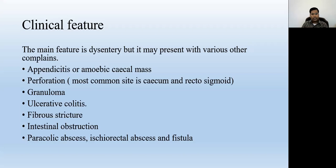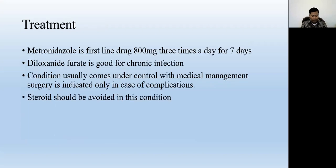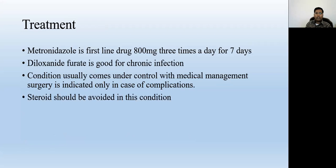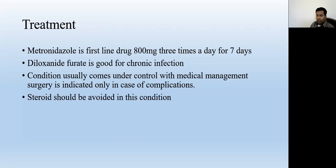These are some other complications and presentations that you can find in a patient with amoebiasis. For treatment, if there are no severe complications like perforation, intestinal obstruction, or fistula, you can treat the patient with chemotherapy — meaning medicines. The medicine used is metronidazole, typically 800 milligrams thrice daily for seven days, which is sufficient to treat the condition.